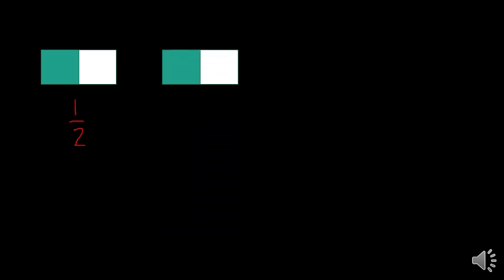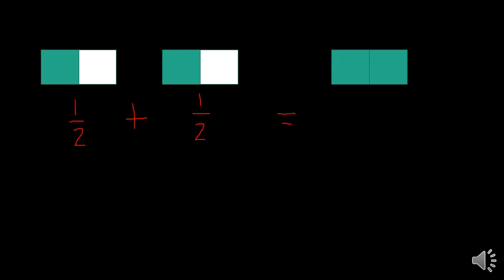Say for instance, I have here illustrations. I'll name this fraction — this is actually one half. And if I combine this one to another one half, meaning to say I have here one half plus another one half. My objective now is to transfer this part to this part, so I'll locate the shaded part here. I have here two out of two, or simply equal to one. That is our example number one.